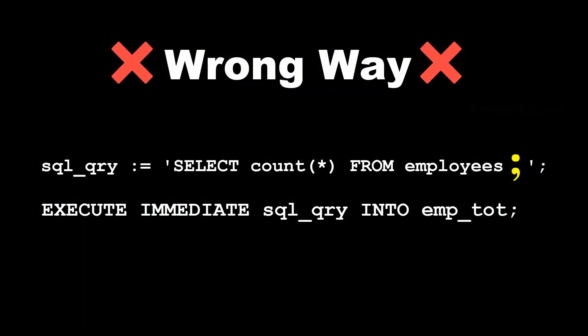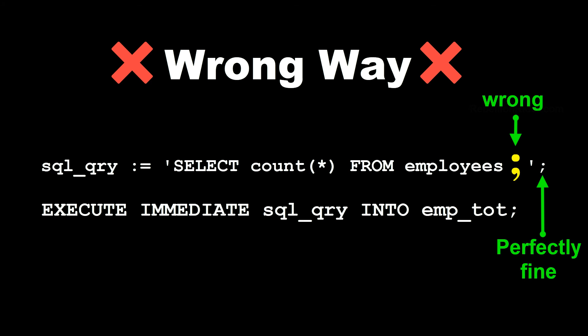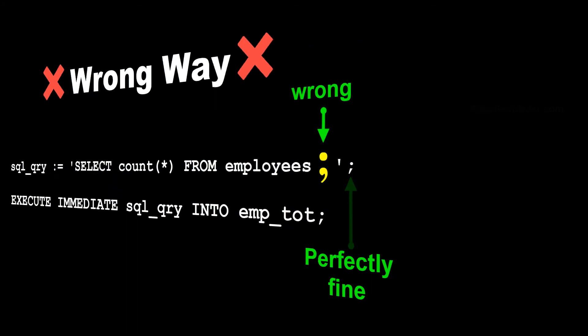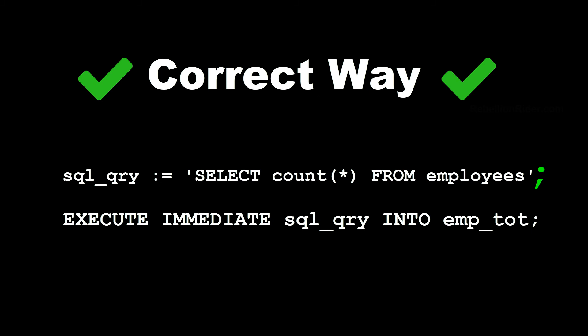On screen you can see an example showing the wrong way of writing a query for EXECUTE IMMEDIATE. Here we put the semicolon inside the single quotes with the query as well as outside the quotes to end the statement. The first semicolon inside the single quotes is wrong, but the second semicolon outside the single quotes is perfectly fine. The correct way has only one semicolon, which is outside the single quotes and none inside. You can head over to my blog to learn the proper way of writing a SQL query directly into your EXECUTE IMMEDIATE statement — link is in the description.